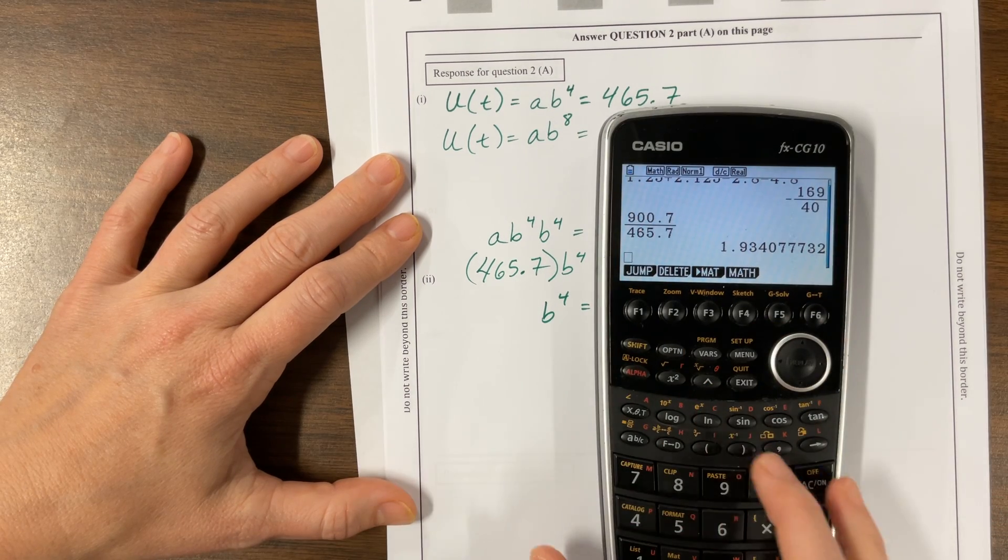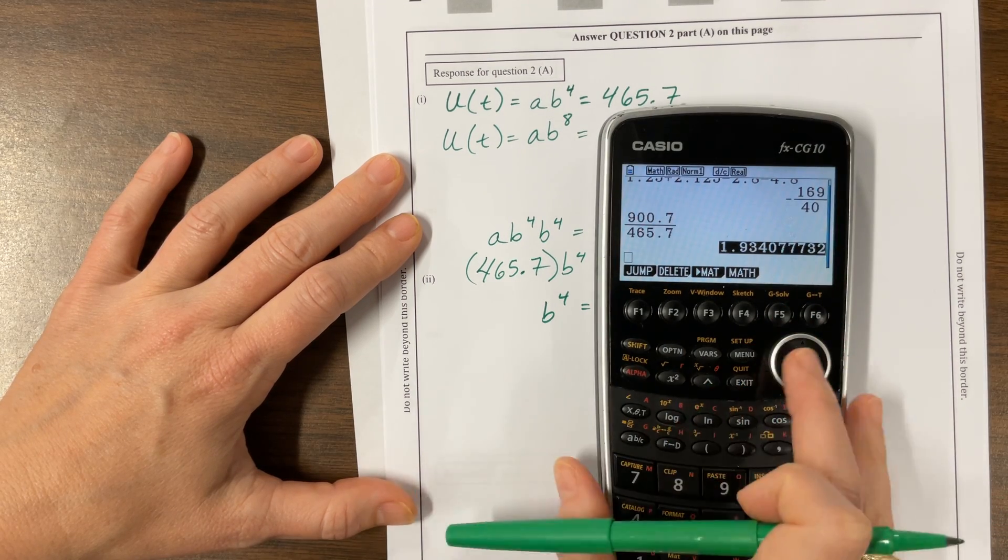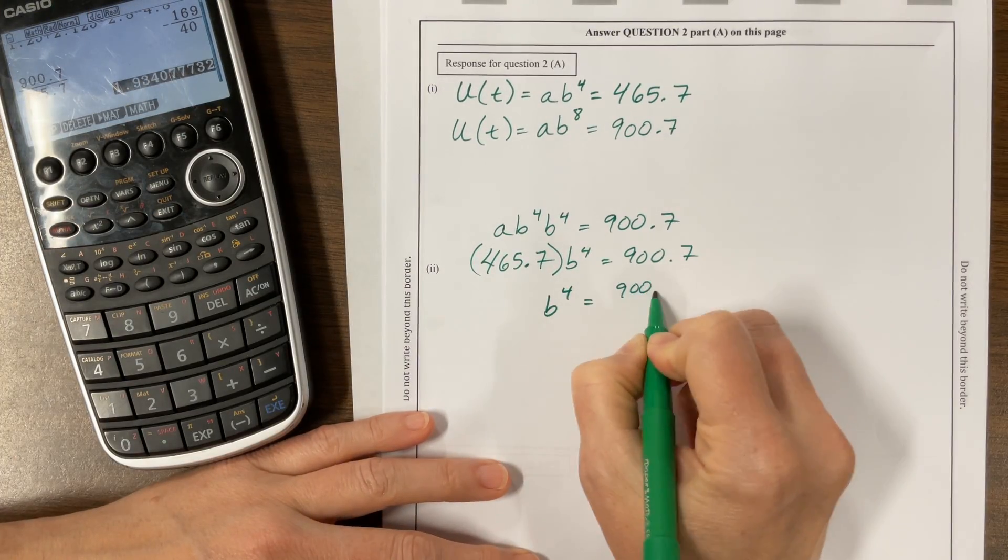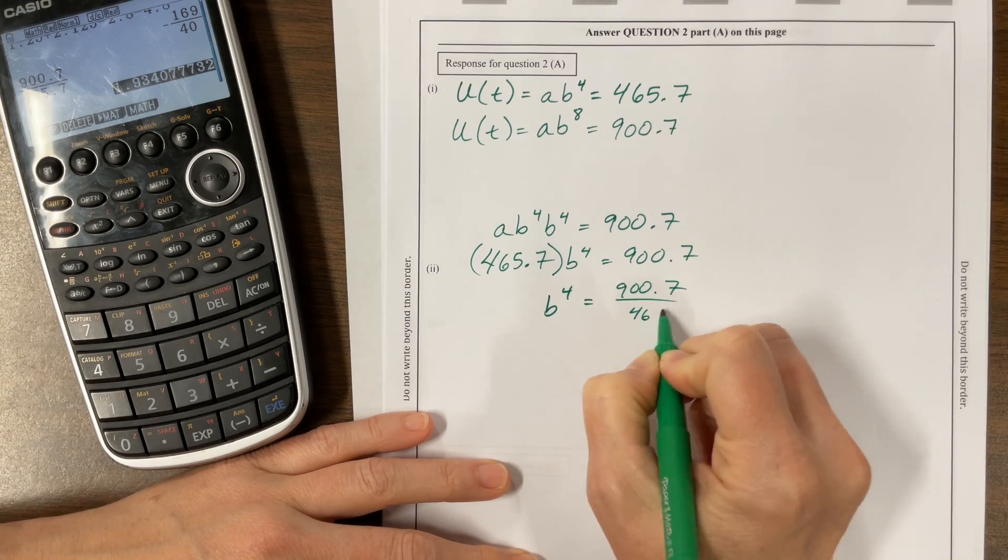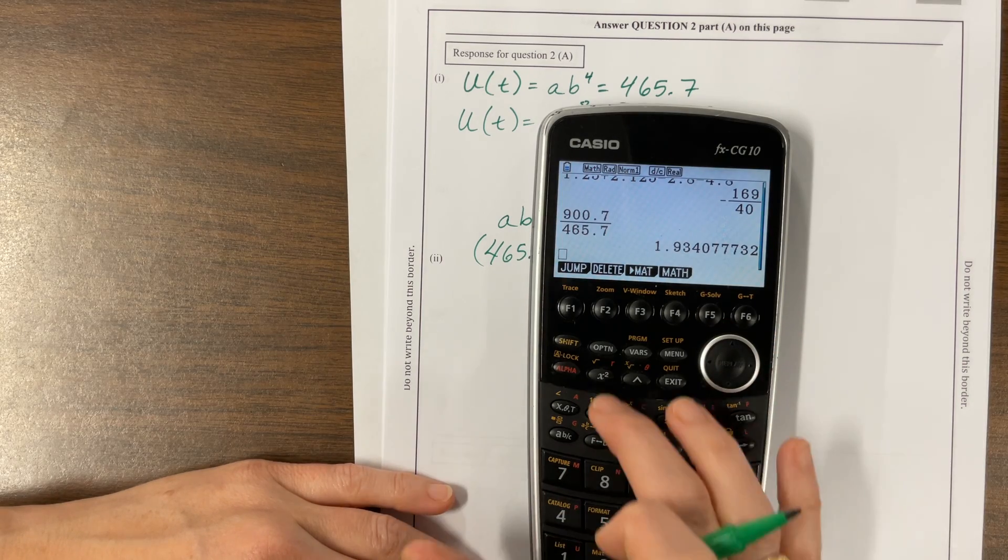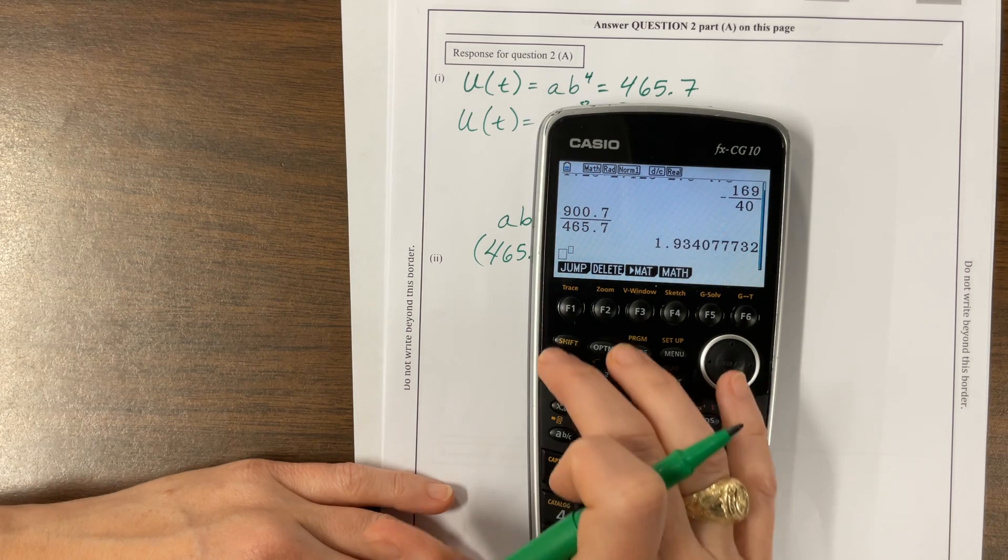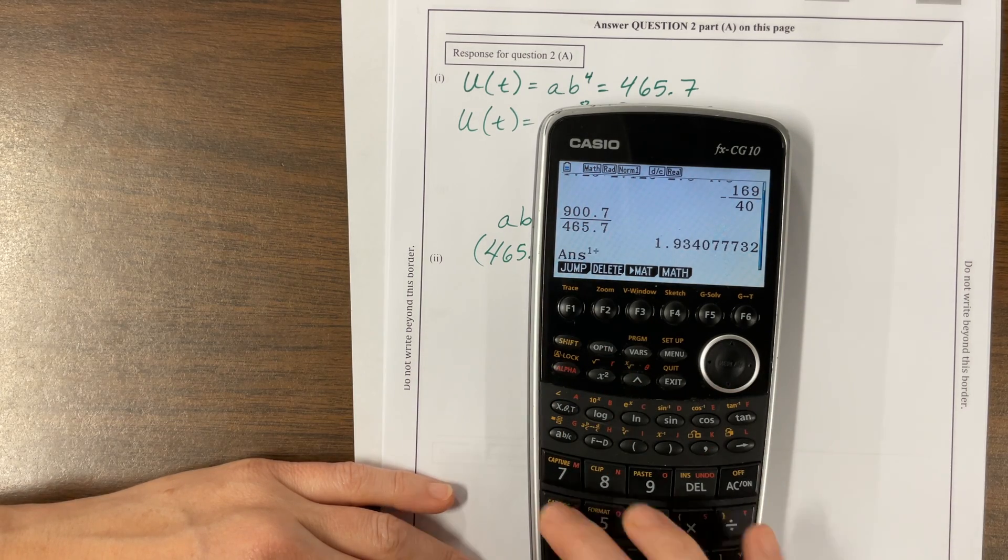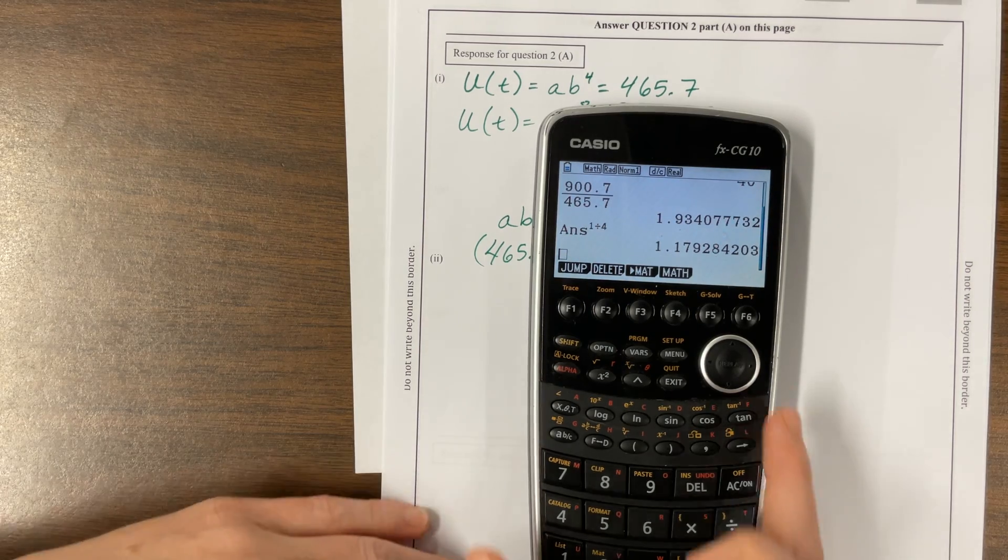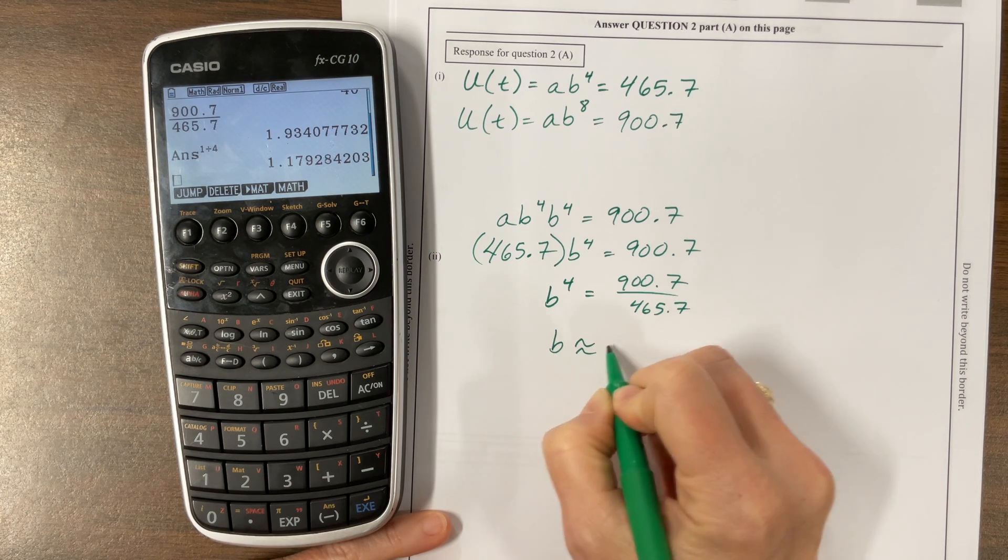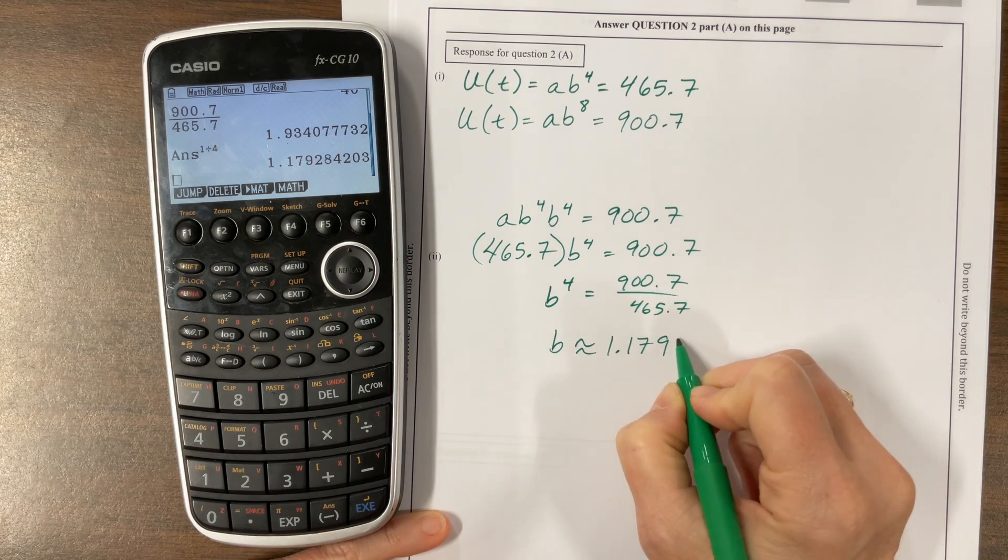465.7 times B to the fourth is going to be equal to 900.7. Well now B to the fourth will be equal to, I can take this 900.7 over 465.7. Now I need to take this value and raise it to the one fourth power. So I found that B is about 1.1793.